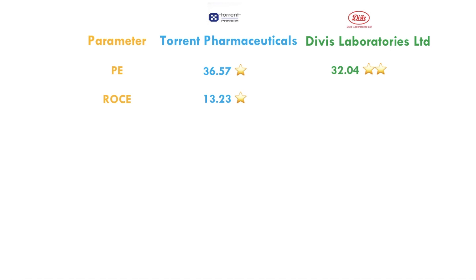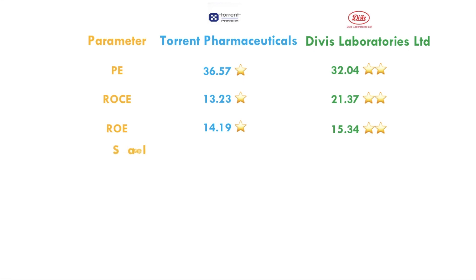The ROCE: Torrent Pharma's ROCE is 13 whereas Divi's ROCE is 21, so I've given two stars to Divi's there. For ROE, Torrent's ROE is 14 whereas Divi's ROE is 15 — there are marginal differences, but the higher one wins. So Divi's wins the ROE parameter with 15, and I've given two stars there.